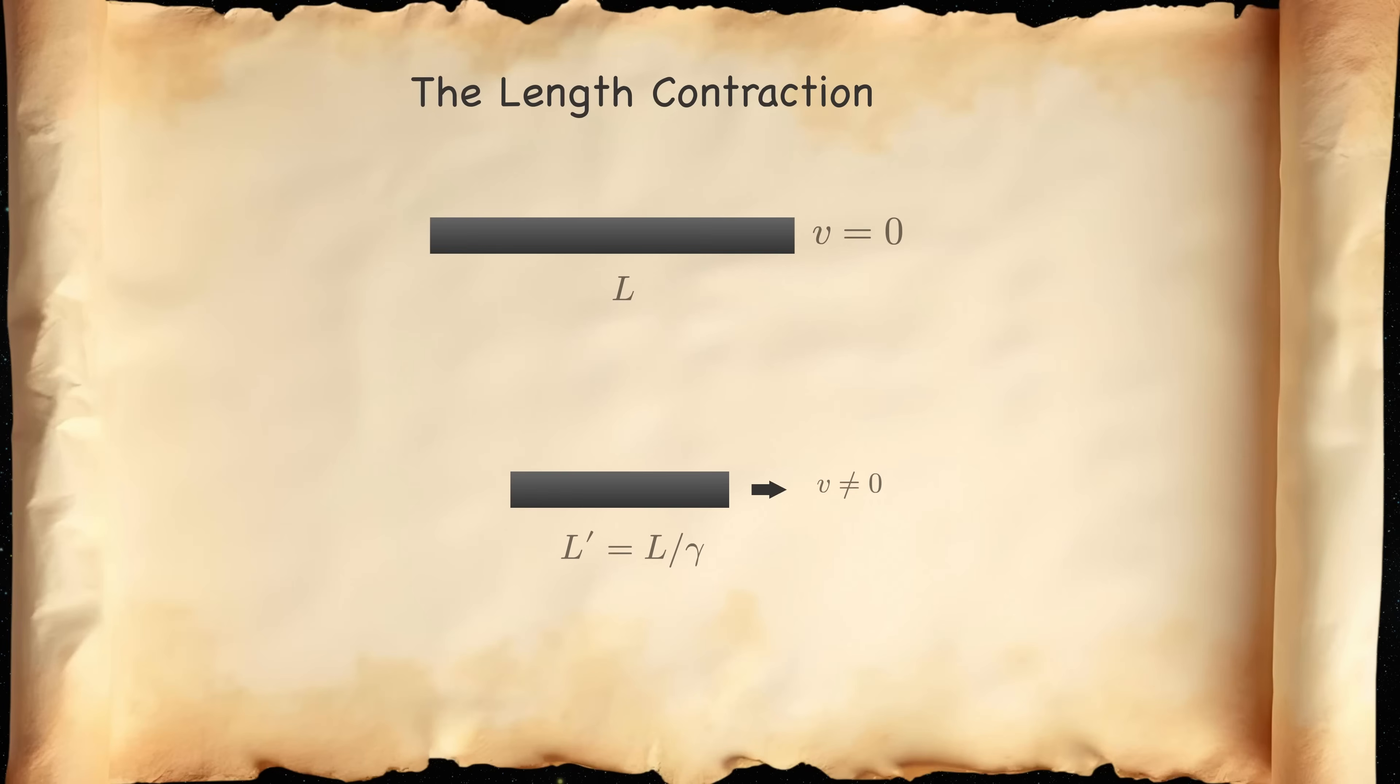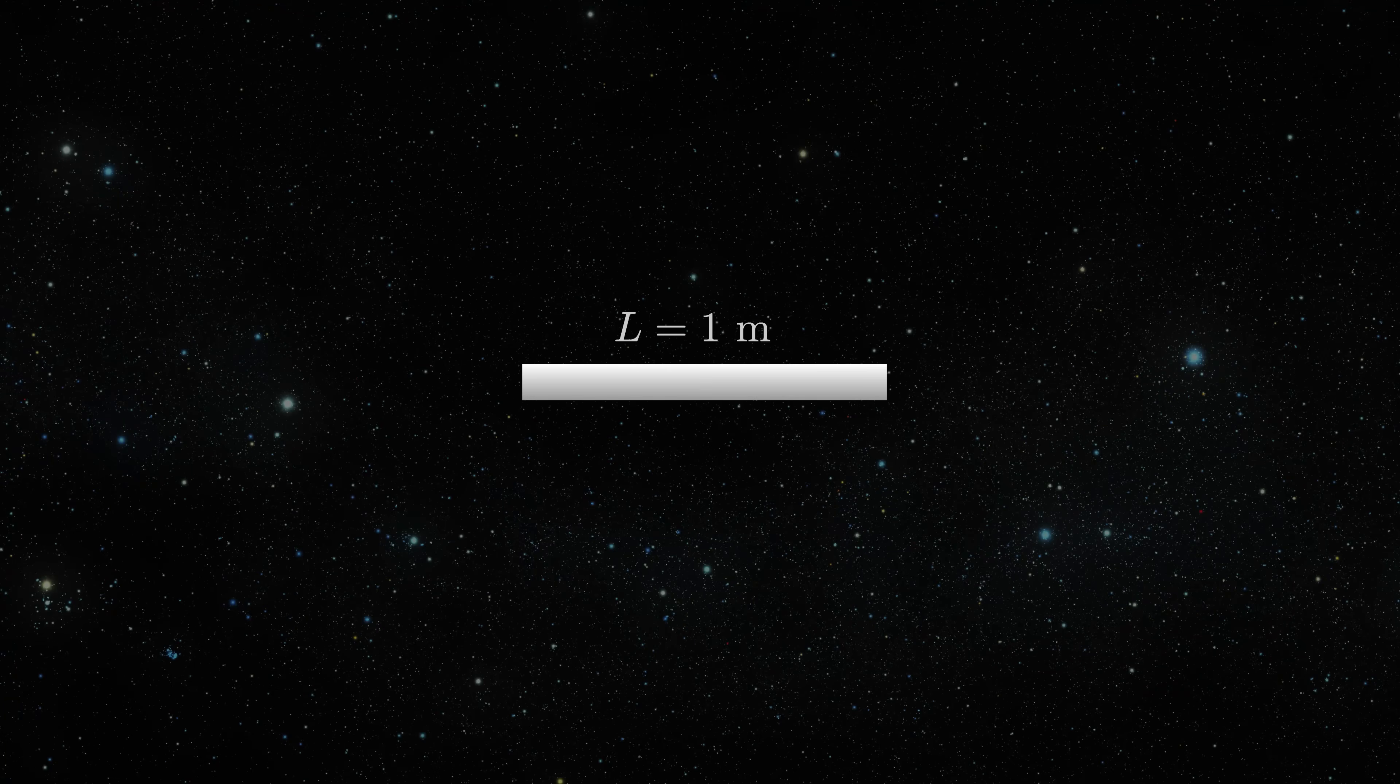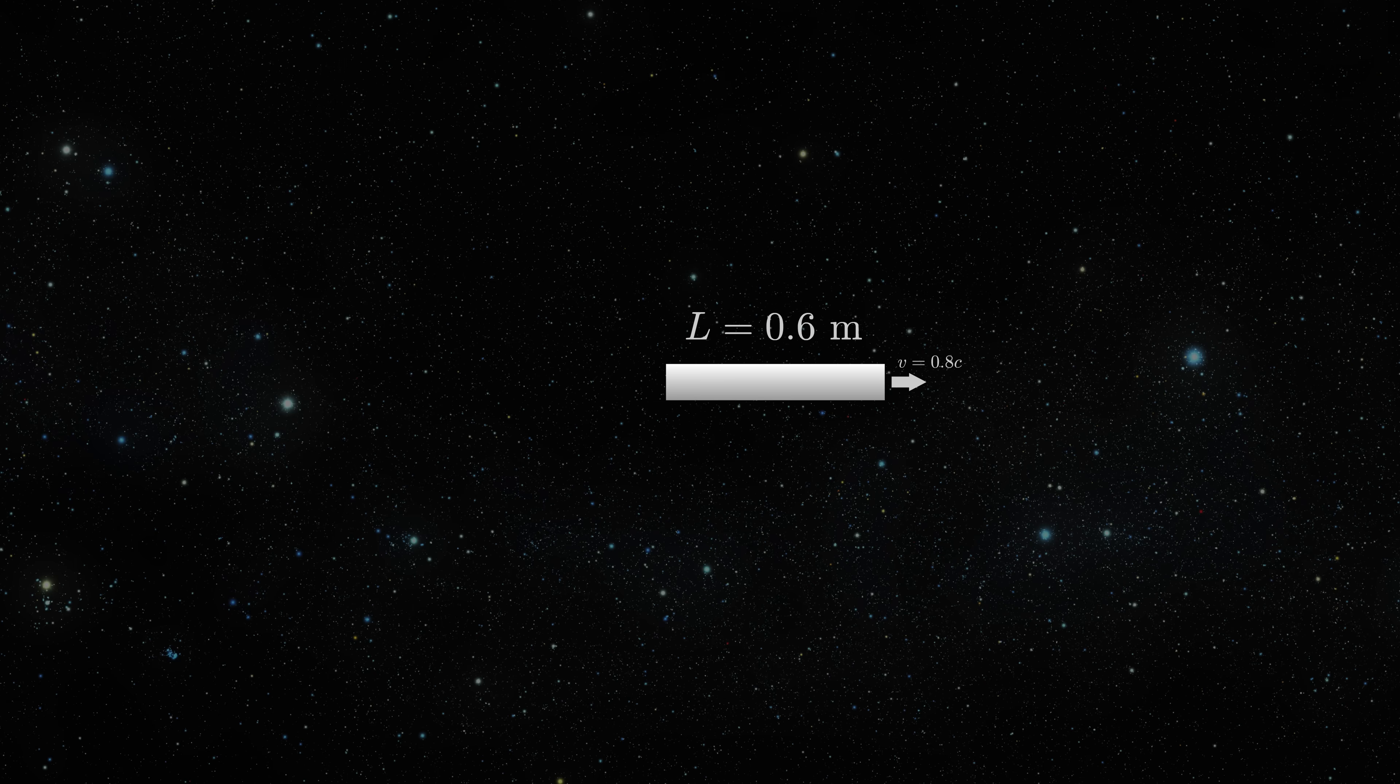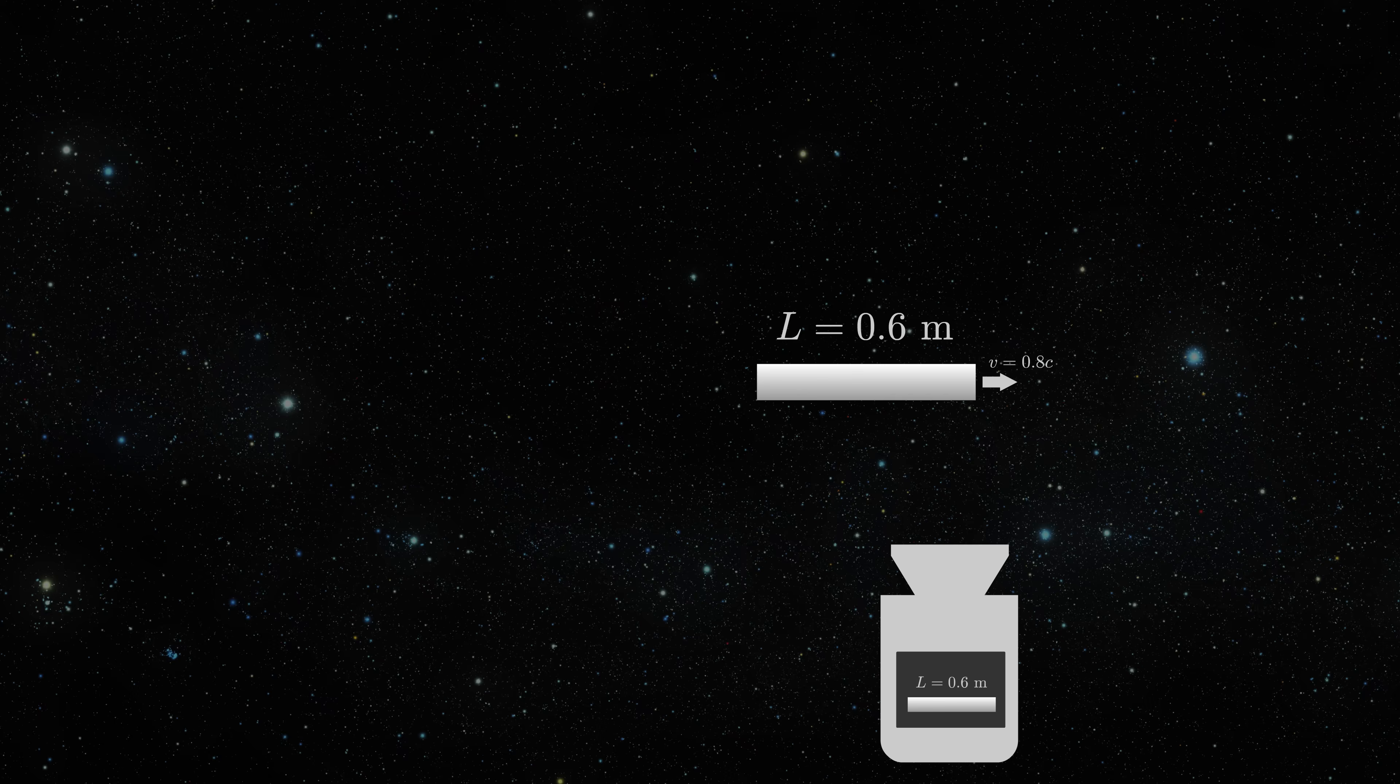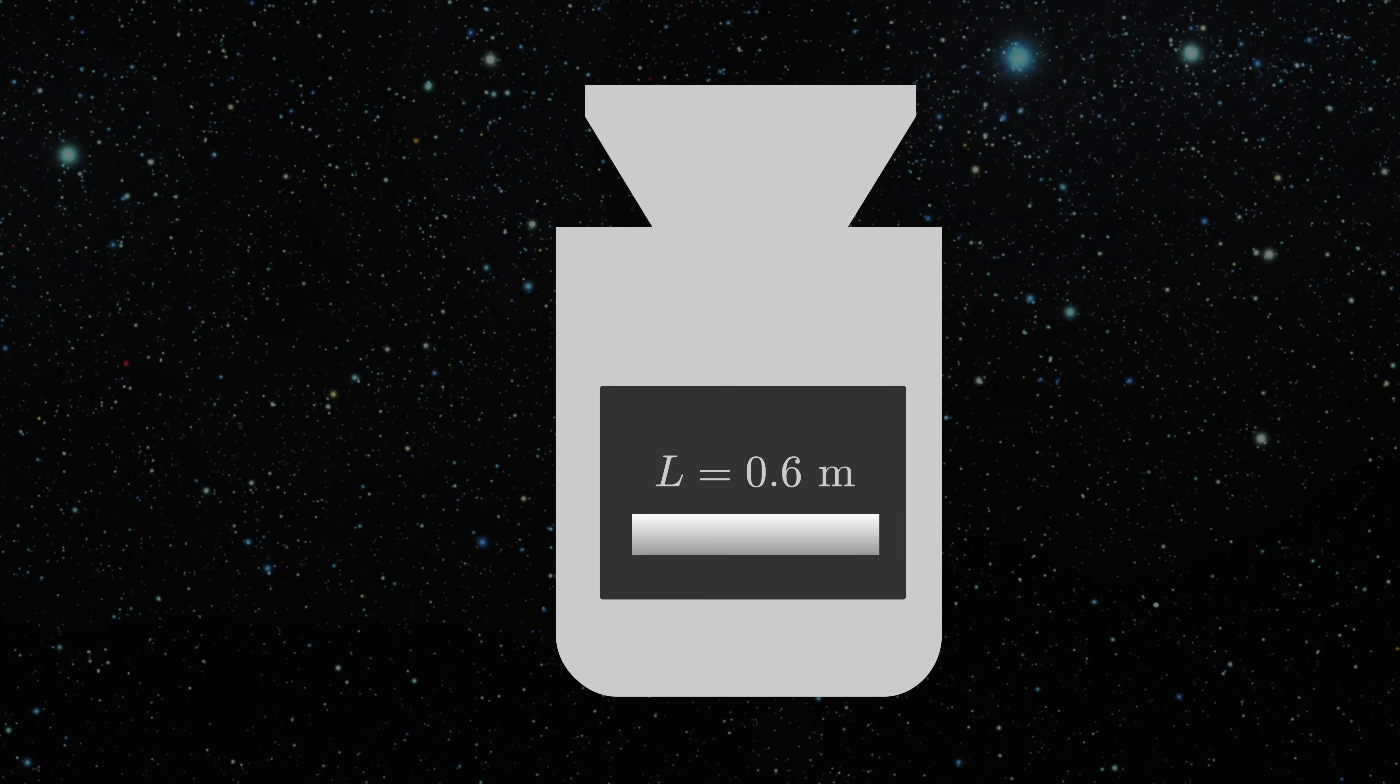Special relativity teaches us that moving objects will be Lorentz contracted by a gamma factor. So if you had a rod that is originally 1 meter long, if it moves at the speed of 80% of the speed of light, it would be just 0.6 meters long. So you would expect that if you created a snapshot of this object with a camera, then you would see it contracted.